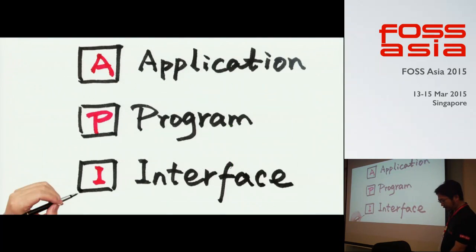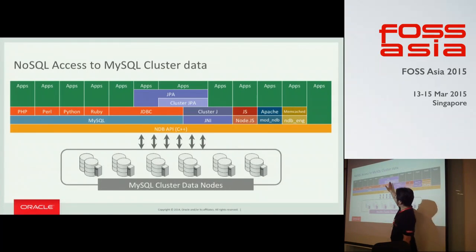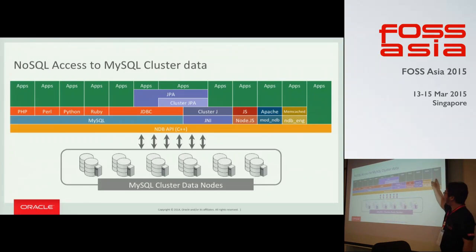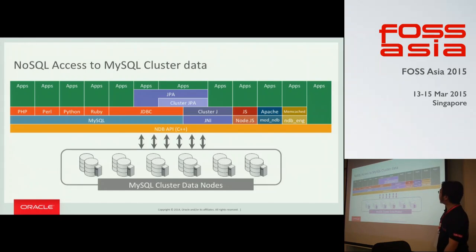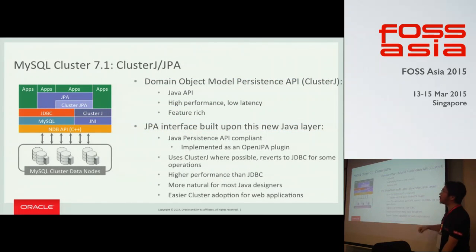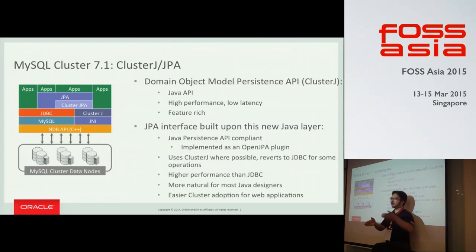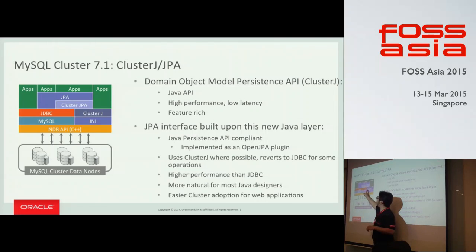MySQL Cluster has a C++ API facing the data nodes. From your C++ application, you can read and write records through this NoSQL key-value API. With Java, we have a wrapper for this NoSQL key-value API — from your Java native application, you can access via ClusterJ without using any SQL statement. If your application has key-value access but also requires join operations like relational operations, use ClusterJPA, which does traffic control for you.